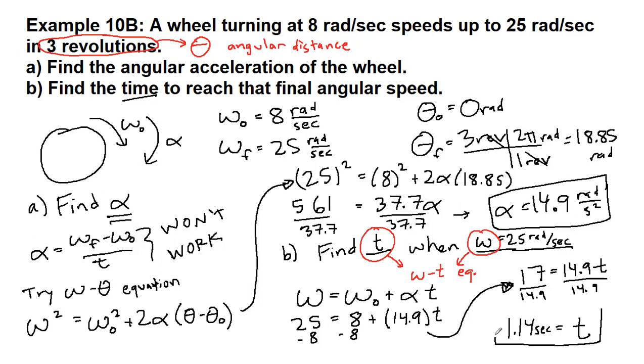So it will take just over a second to speed up from 8 radians per second to 25 radians per second if we only have to circle three times to do so. It's a very big angular acceleration, so that time seems reasonable enough to us based on the intuition that we're starting to build in this chapter.